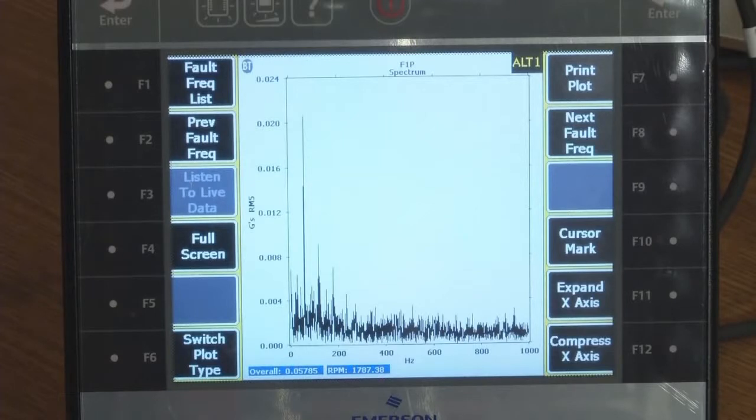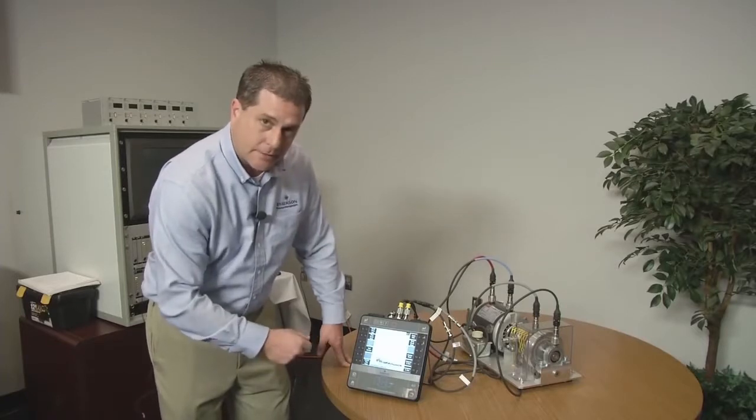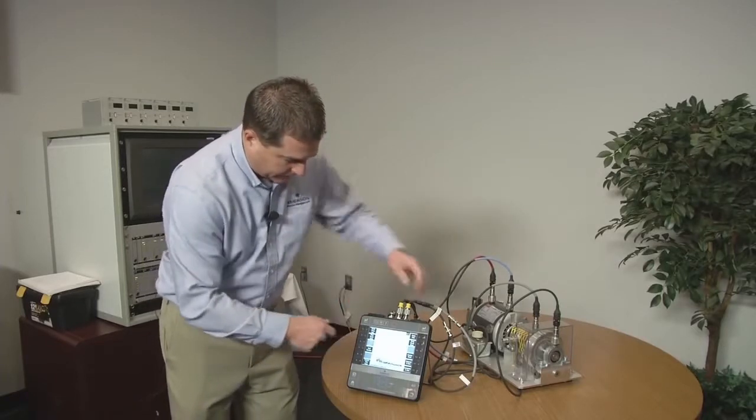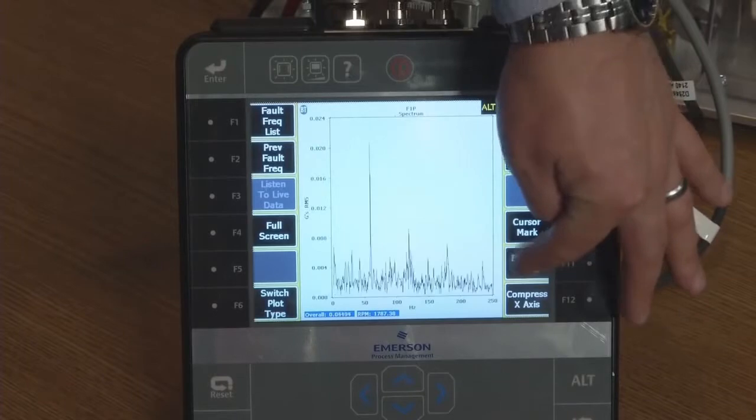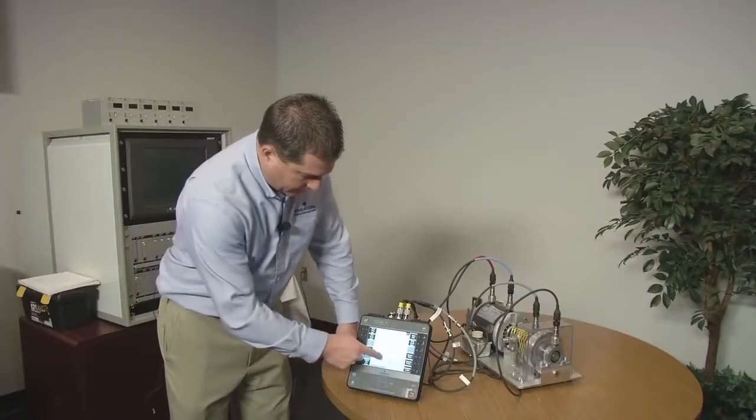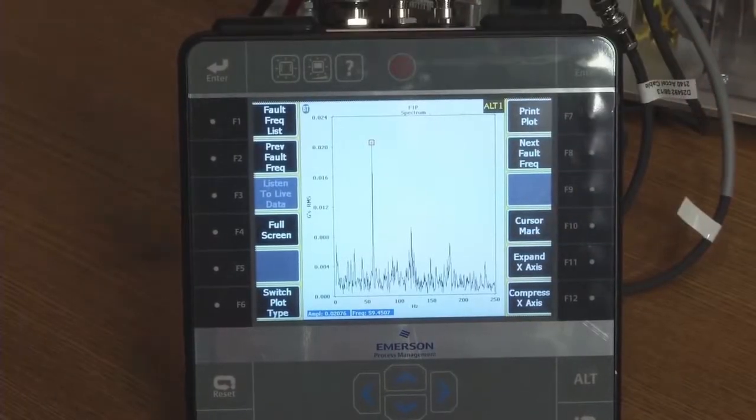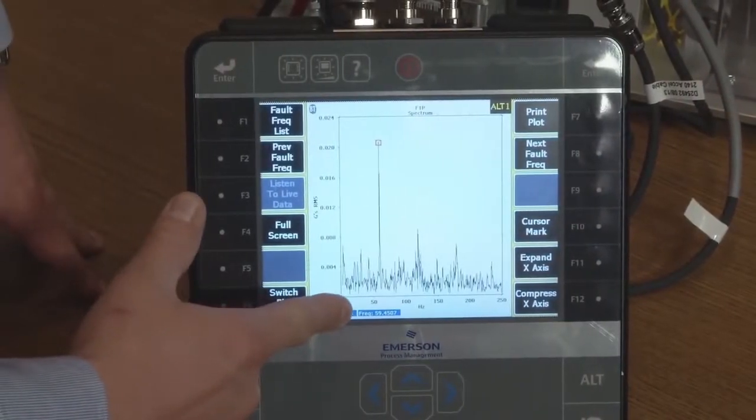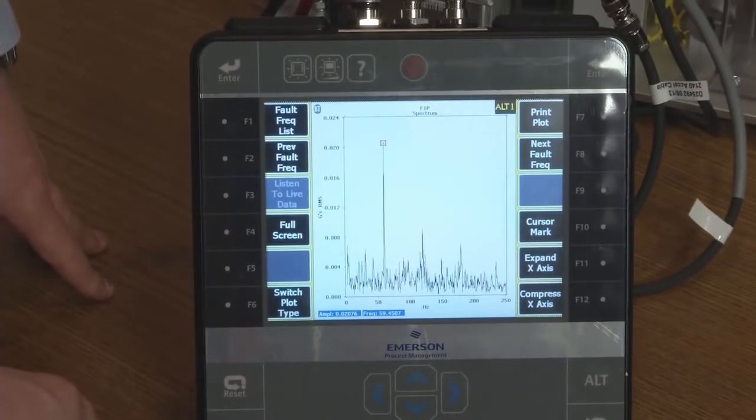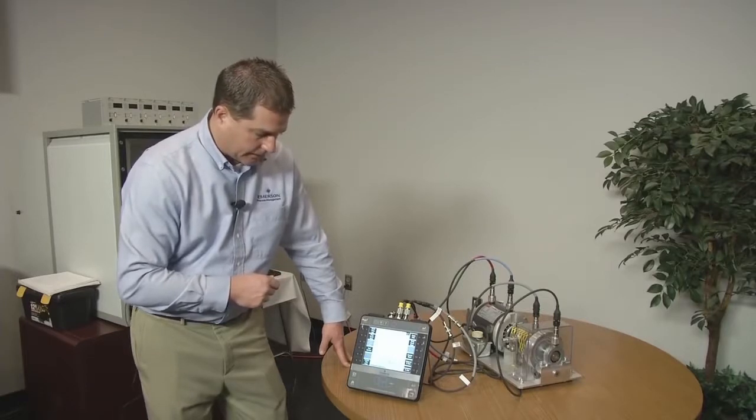And so you can see it come up here and I've got this really large peak down here in the lower frequency zone. And I'm assuming that's probably my two times turning speed peak. I'm going to expand my X axis by pressing F11 here so I can see that peak a little better. I'm going to touch the screen and I'm going to mark this peak. It's marked at 59.45 hertz. And that is two times turning speed for this particular demo kit here.